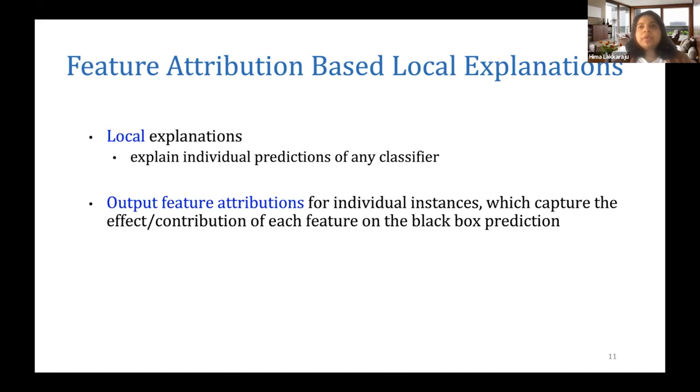Think of explaining the complete behavior of a given model - you're basically giving a full summary of how this model is behaving on different kinds of data instances. That's called global explanations. There's also a granularity in between called subgroup level explanations, which is about explaining model behavior on certain subgroups of individuals in the data.